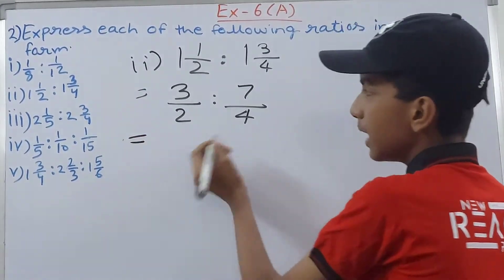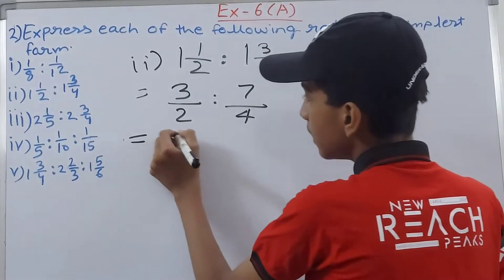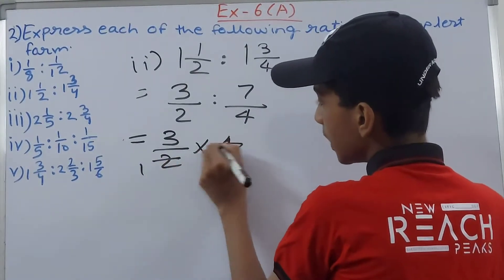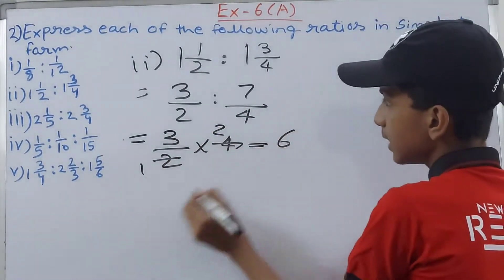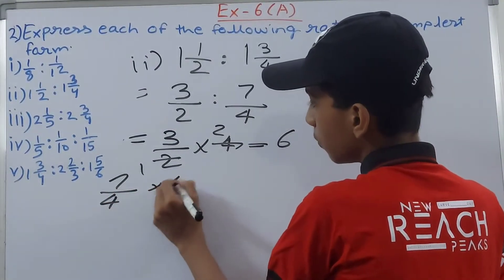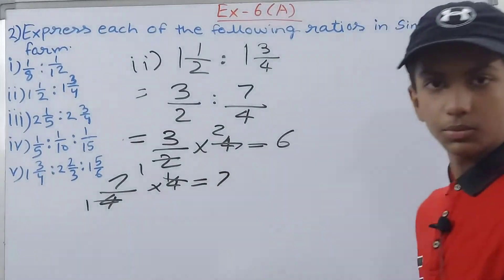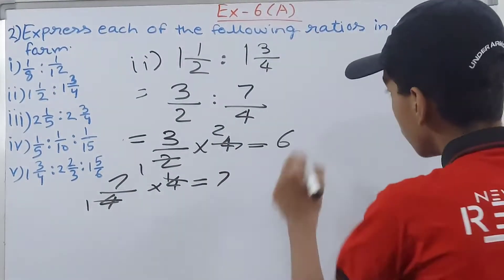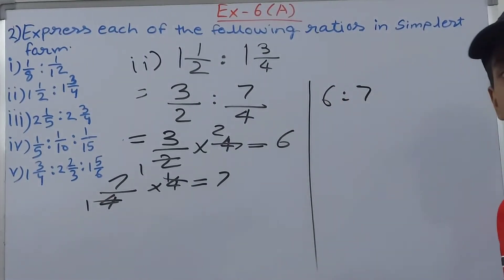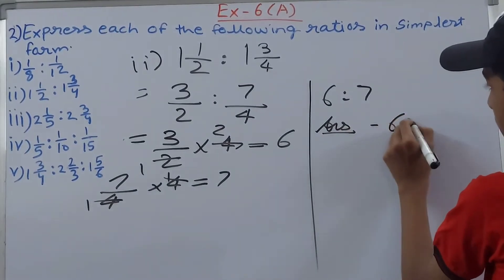The LCM of 2 and 4 is 4. So 3/2 × 4 = 6, and 7/4 × 4 = 7. The ratio becomes 6 : 7. Can we simplify this further? No. So our answer is 6 : 7.